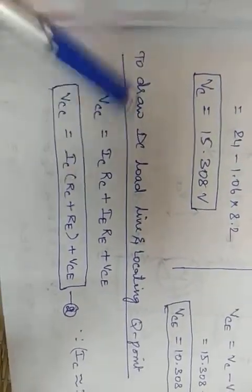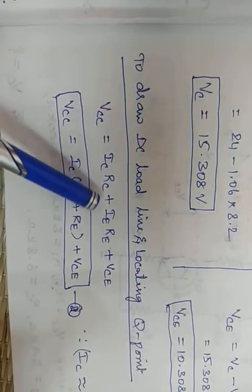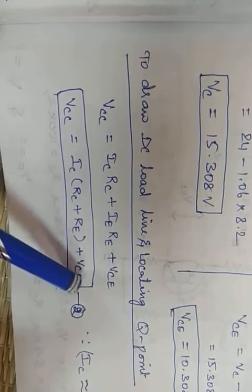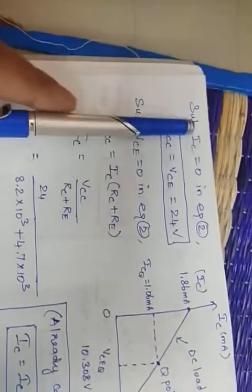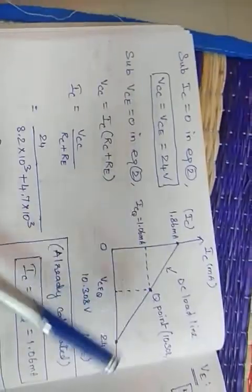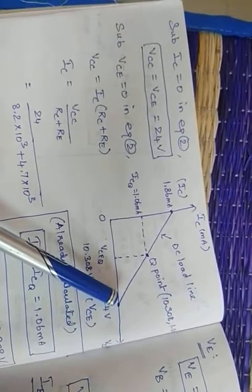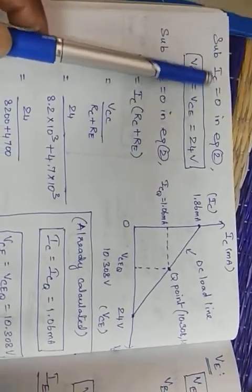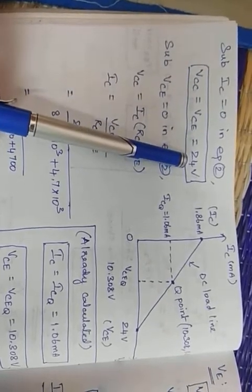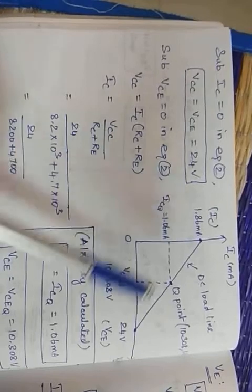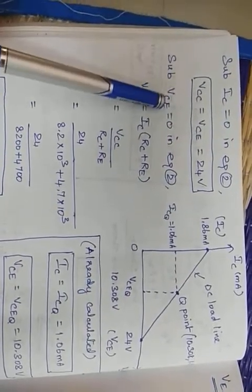The DC load line and Q-point locating is extra — not asked in the question, but this is how you derive it if asked. The equation is: VCC = IC×RC + IE×RE + VCE. Substituting IC = 0 to get the x-axis point, VCE = VCC = 24V.